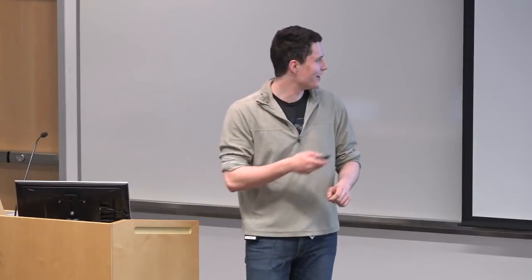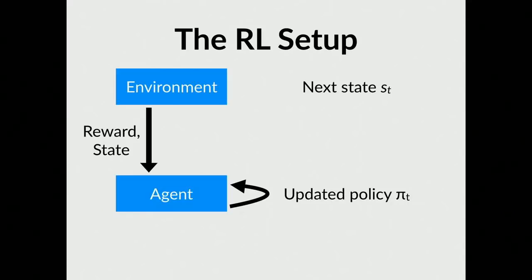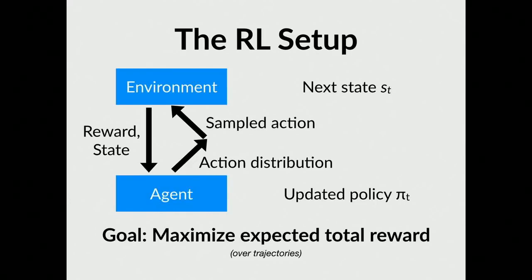The environment shifts to the next state — if you sold a stock, maybe that stock price goes lower. The state changes, you get some reward (maybe you made money, maybe not), and based on that information you shift your policy to make your agent better for the next round. This repeats: update policy, play action, get reward and next state. The ultimate goal is to maximize your overall expected reward over the trajectory — the sequence of state, action, reward repeated until the end.